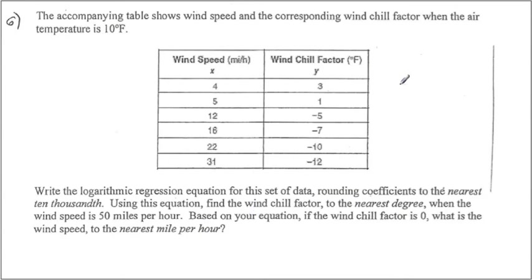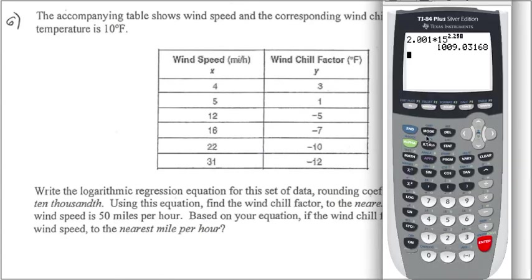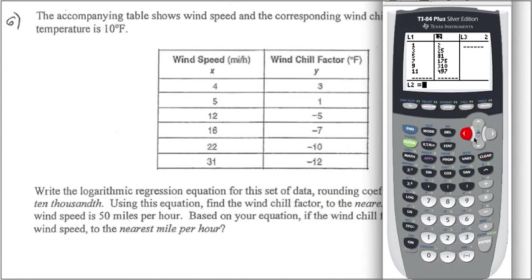Alright, let's look into this question. Same idea here. Logarithmic regression for this data to the nearest 10,000. So, let's try to put this into the calculator first. Let's plug in the values. 4, 5, 12, 16, 22, 31. And 3, 1, negative 5, negative 7, negative 10, and negative 12. Alright, so we have to put them into the stat.